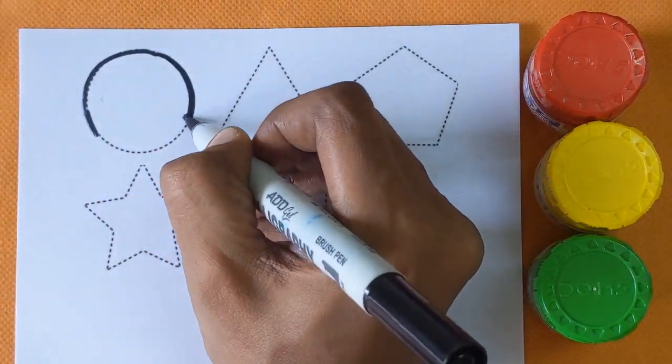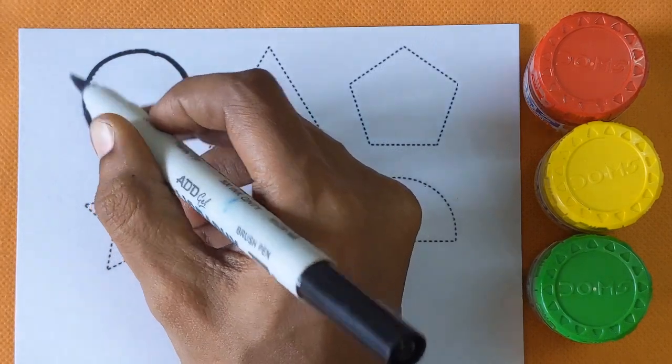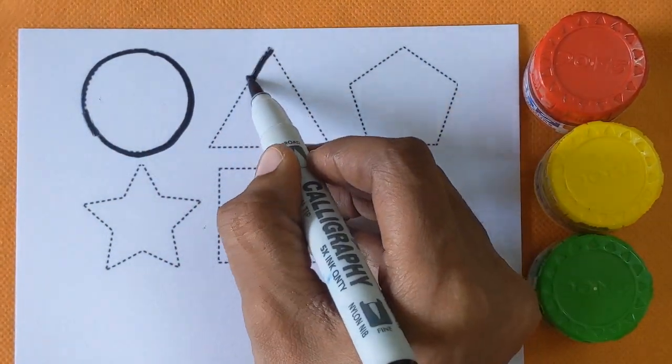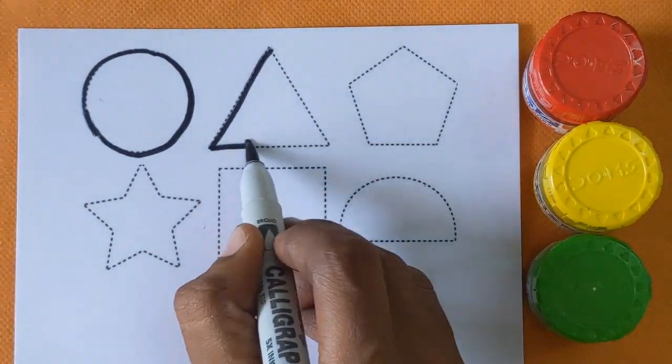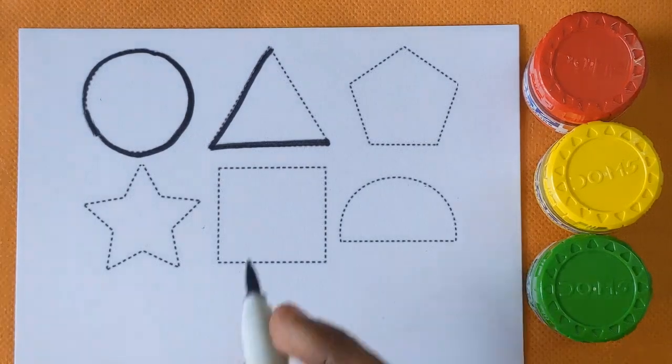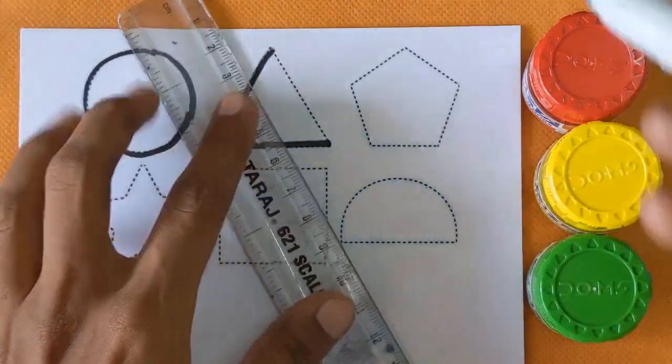This is circle shape. Triangle. Which shape is this? This is triangle.